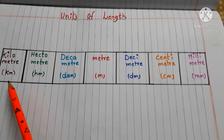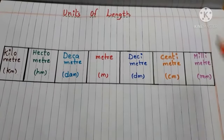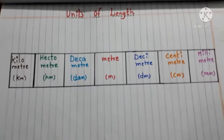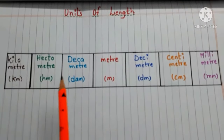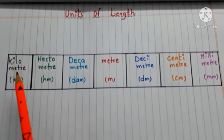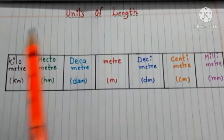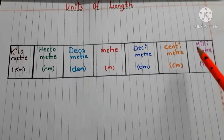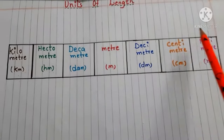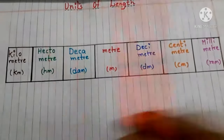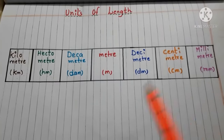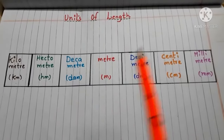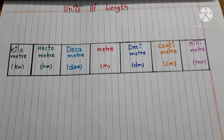Now let us see the units of length in a table: kilometer, hectometer, decameter, meter, decimeter, centimeter, millimeter. Kilometer is the highest unit of length; millimeter is the smallest unit. This table shows units from highest to lowest moving left to right, and smallest to highest moving right to left.